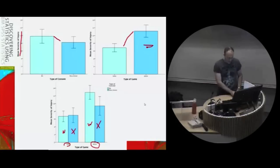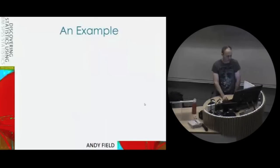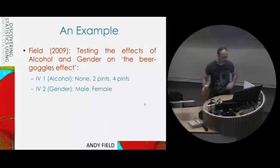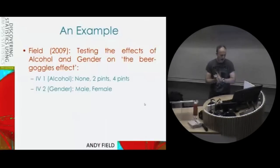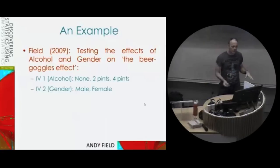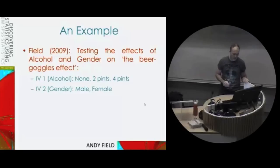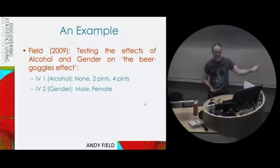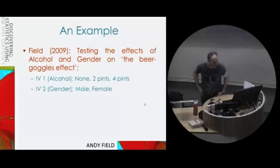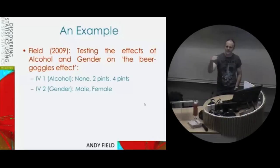To keep things close to the textbook and handout, the first example we'll go through is about the beer goggles effect — the idea that your standards for choosing dates are affected by alcohol. The more you drink, the more you lose your sense of what's attractive. We've got an independent variable representing the beer goggles effect: dose of alcohol — no alcohol, two pints, or four pints. And if our outcome is the attractiveness of the partner chosen that night, that effect of alcohol basically tells us the beer goggles effect.